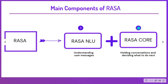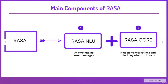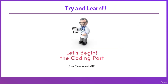Moving towards Rasa Core: Rasa Core is responsible for predicting responses based on user messages by applying machine learning algorithms, and it is also responsible for triggering the action server for generating dynamic messages. That's all for the theory part — let's jump into the coding section.